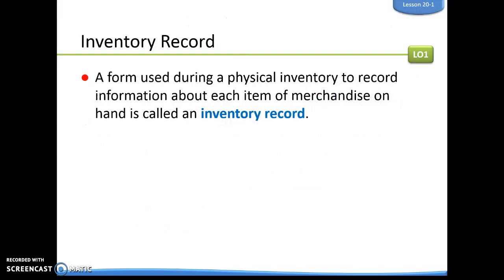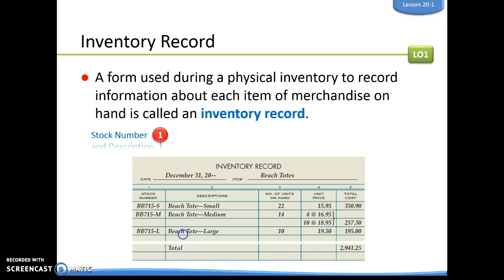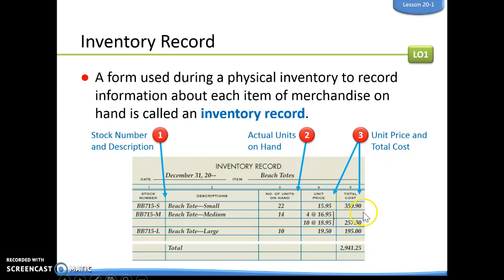An inventory record is the form we're going to use during a physical inventory to record information about each item of merchandise on hand. This is an example of what an inventory record might look like. The main things we're going to have are the stock number, the description, the number of units on hand — that is the physical count — the unit price, and then the total price, which is simply the number of units times the unit price to get total cost.